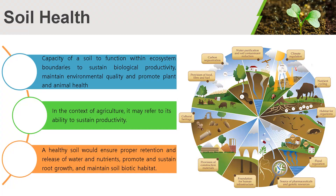Soil health. We can define soil health as the capacity of a soil to function within ecosystem boundaries to sustain biological productivity, maintain environmental quality, and promote plant and animal health. In particular, it deals with the ability of soils to provide nutrients to plants for their growth and reproduction. All plant nutrients which are minerals in nature are provided from the soil. The presence of high concentration does not refer to soil fertility, because an element present in higher concentration in soil may not be available to plants due to their forms, bindings to soil particles or other chemical compounds, and other physicochemical properties of soil. The concentrations of plant-available essential elements refer to soil fertility.